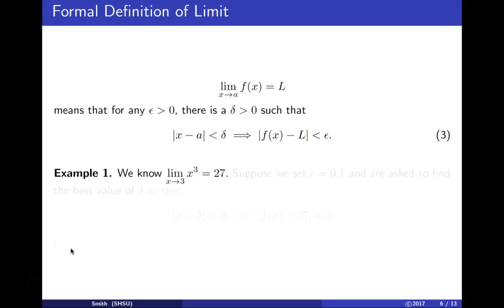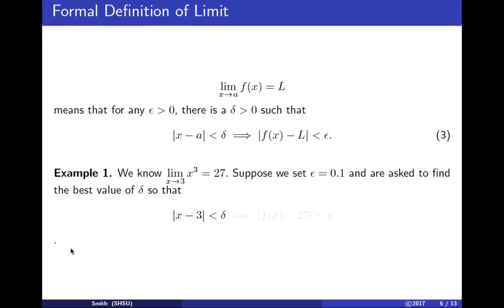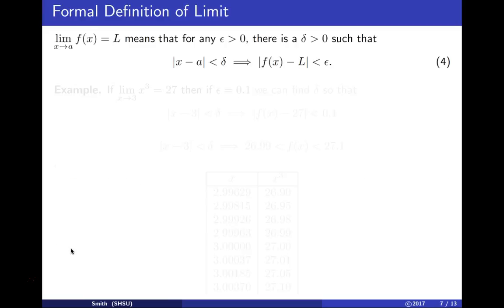Let's do an example. The limit as x approaches 3 of x cubed is 27, so we're going to explore that by setting epsilon equal to 0.1. This is the error measurement in the y direction, and we're going to try to find a value of delta that forces that error measurement. As long as x is within delta of 3, f of x should be within epsilon of 27.